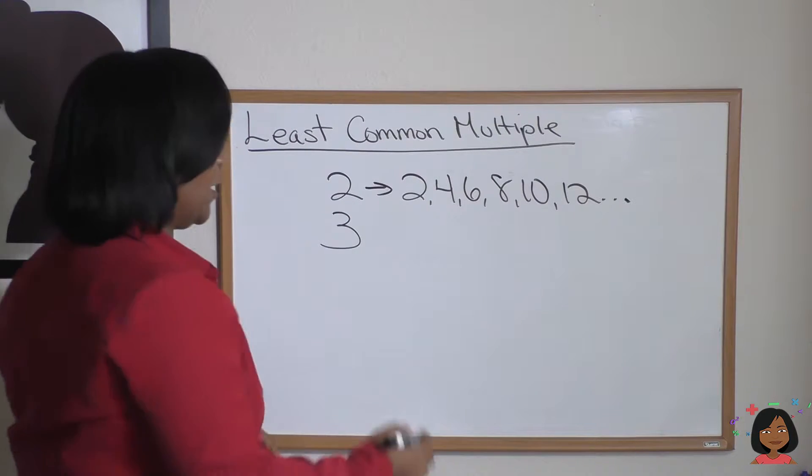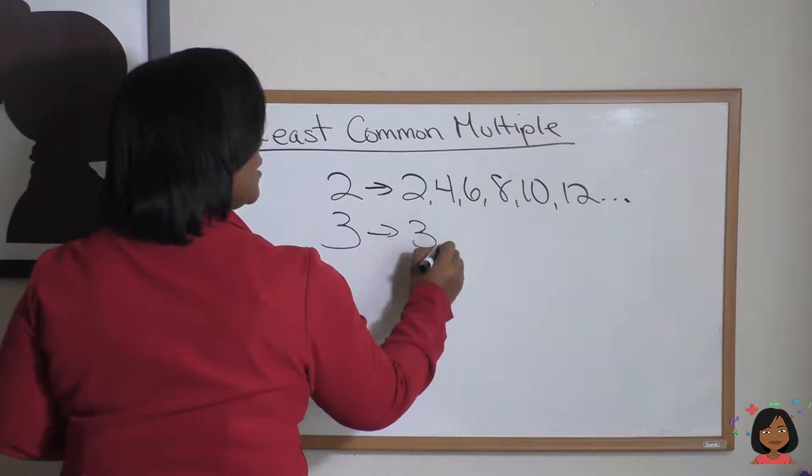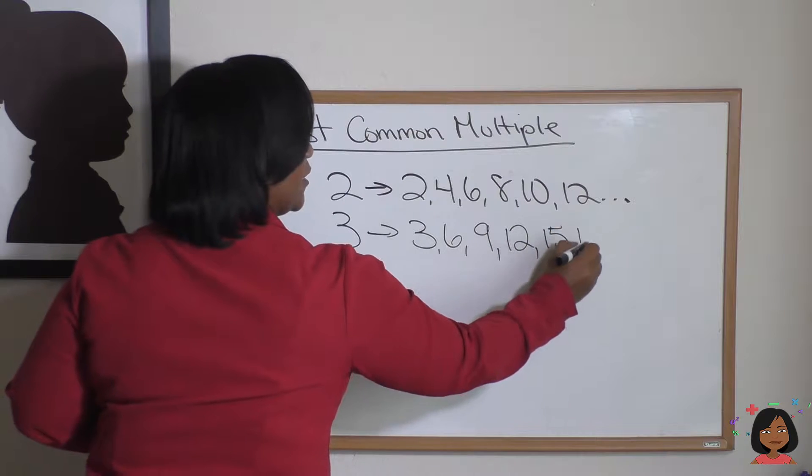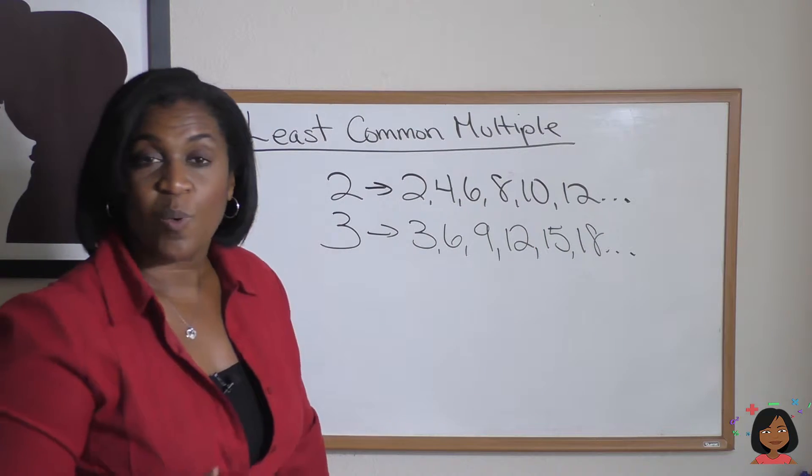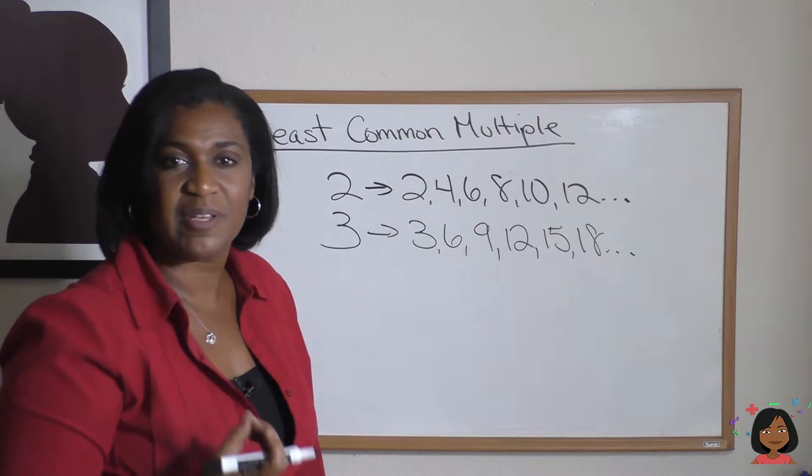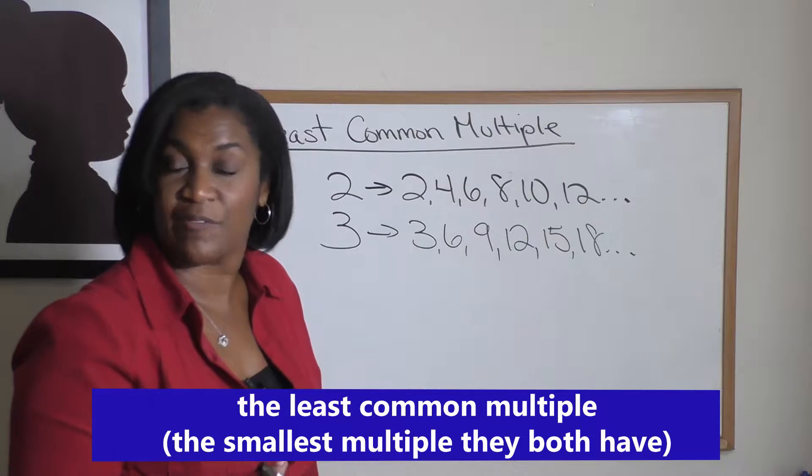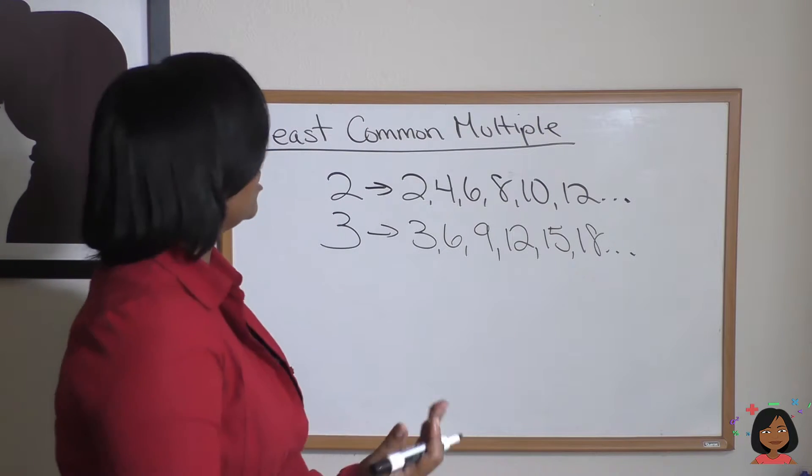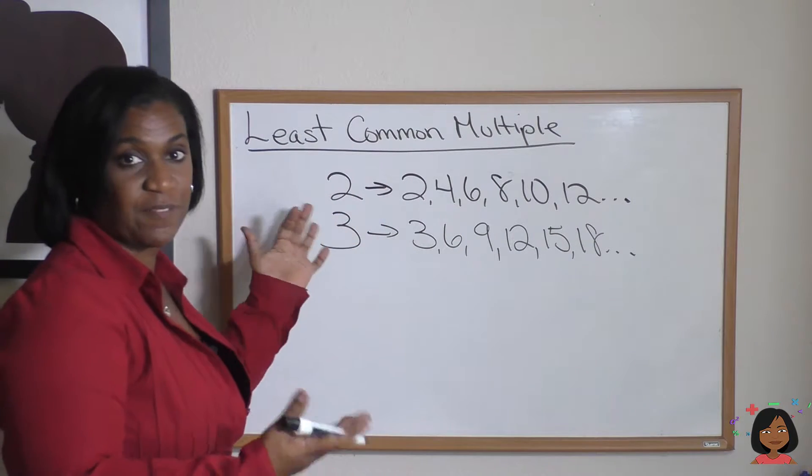The multiples of three are three, six, nine, twelve, fifteen, eighteen, on up. So we're talking about least common multiple. Common means let's look between the two and see what they have in common, and least means we're looking for the smallest one. Let's take a look—what number appears in both of these lists?